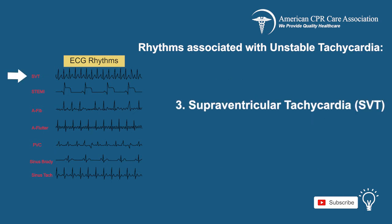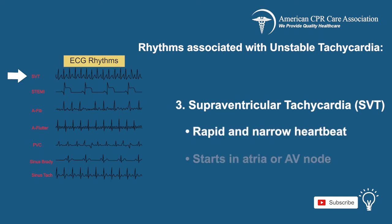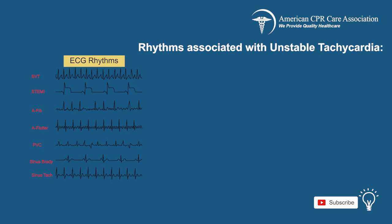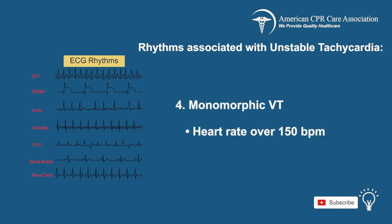Supraventricular tachycardia, or SVT, is a rapid and narrow heartbeat that starts in the atria or AV node. Monomorphic VT is a heart rate of over 150 BPM, but all QRS complexes look the same.